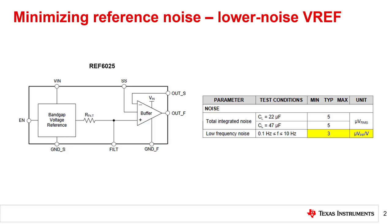One simple way to reduce reference noise is to use a low noise reference. Shown here is the functional block diagram and noise table for the REF6025, the voltage reference used in the previous Precision Labs module on reference noise.